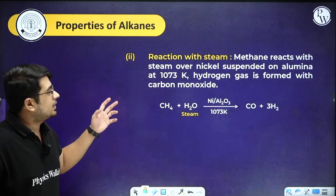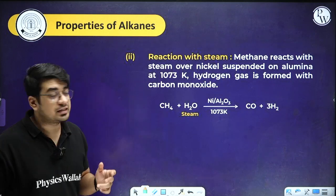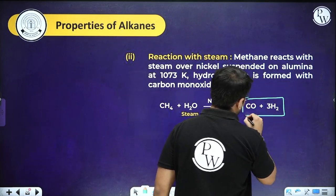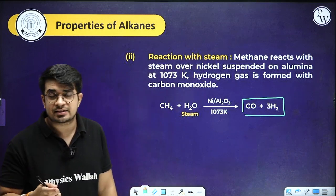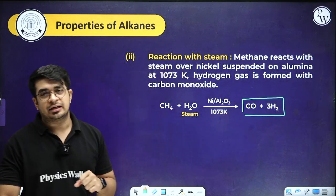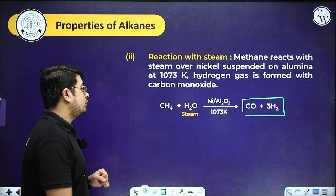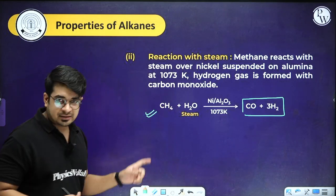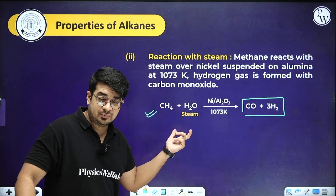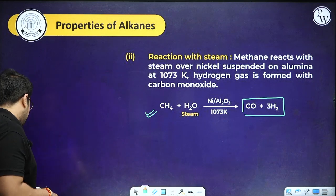Methane reacts with steam over nickel suspended on alumina at 1073 K to produce synthesis gas. The reaction: CH4 + H2O → CO + H2 (in presence of Ni/Al2O3 at high temperature). This mixture of CO and H2 is known as syngas or synthesis gas, and it has many important applications in chemistry for forming different types of compounds.